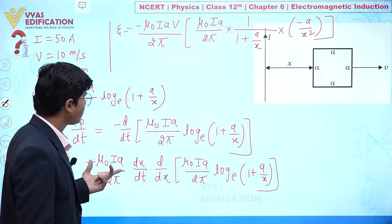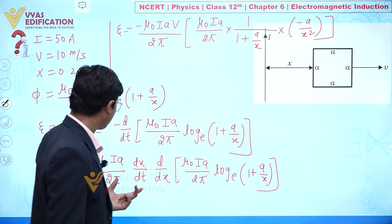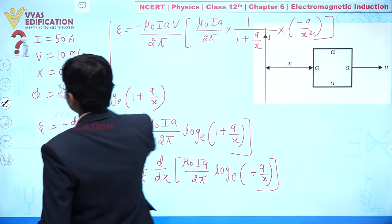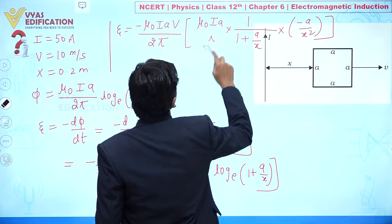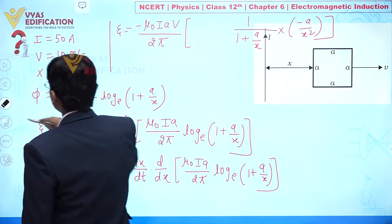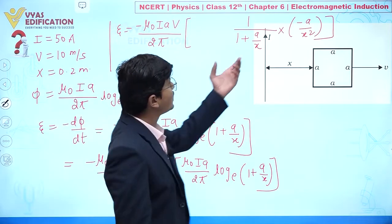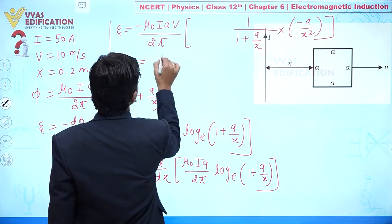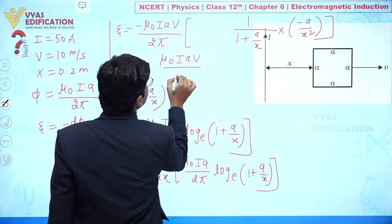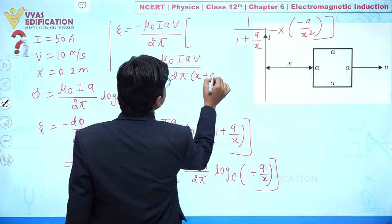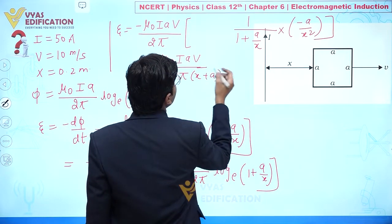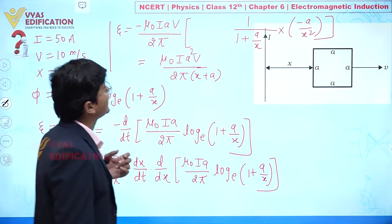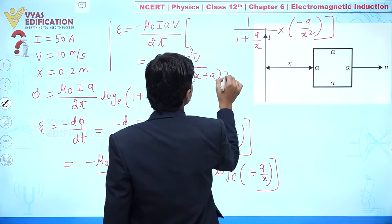After simplification, the induced EMF becomes ε = (μ₀Iav) / (2π) · a / (x(x + a)), which gives ε = μ₀Ia²v / (2π · x(x + a)).